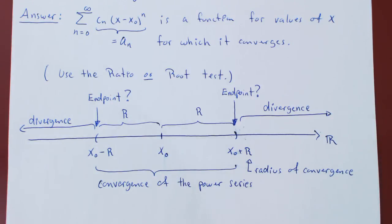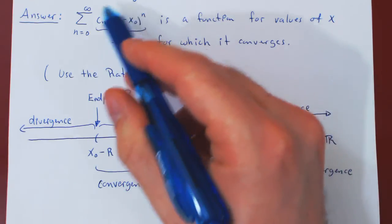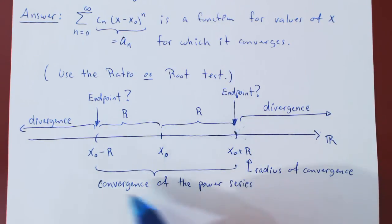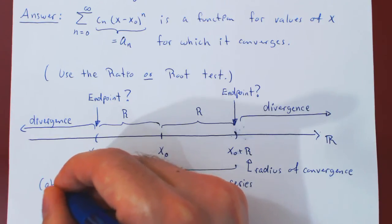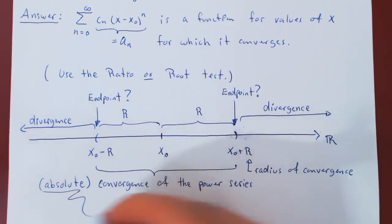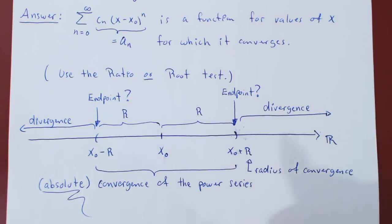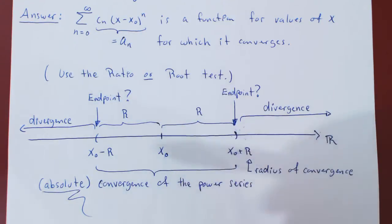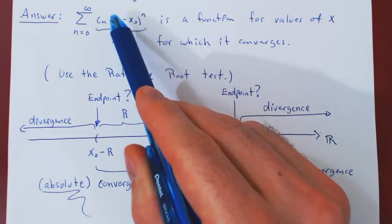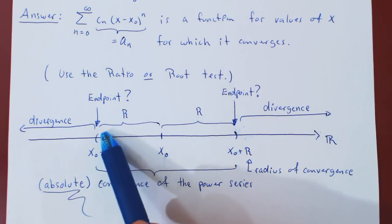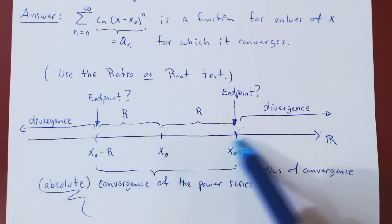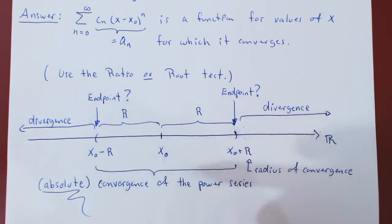One additional property: because we will be using the ratio or root test, not only will we have convergence inside this open interval, we will have absolute convergence — an even stronger form of convergence. In the next three videos, we will look at one example each of an explicit power series, and the question will be to find all values of x for which the series converges, therefore finding all values of x for which a power series is a function. As we're about to see, we will always be in a similar position, and the endpoints will be a case-by-case.